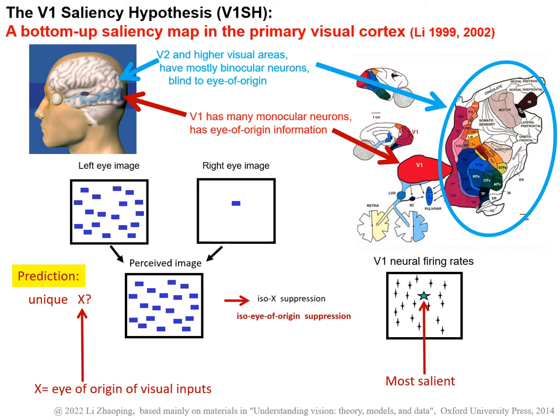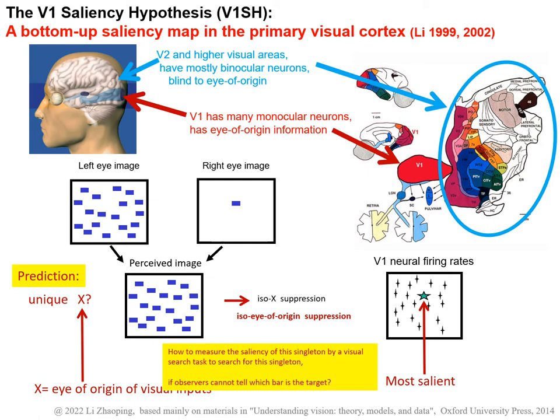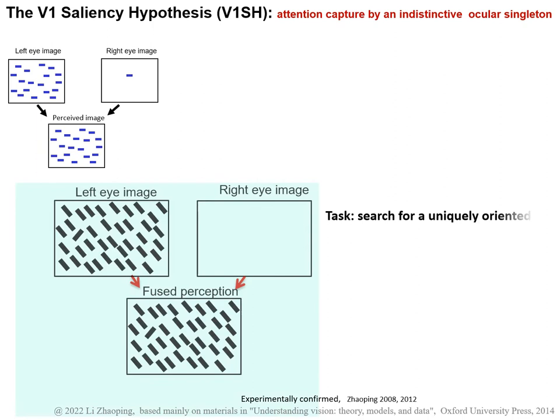Since this unique eye-of-origin singleton is not distinctive, the question is how to measure its saliency by the reaction time to find it as a search target if observers cannot tell which bar is the target of their search. We can instead ask observers to search for something they can see — in this case, a uniquely oriented bar where all bars are shown to the left eye only. The target is easy to find since it's salient by escaping the iso-orientation suppression and evokes the highest V1 response to this image.